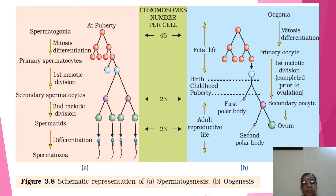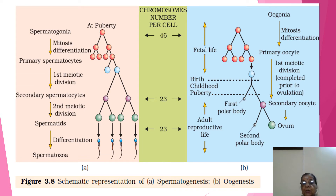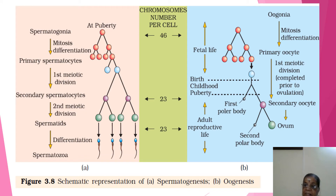We studied spermatogenesis and oogenesis. This is an important event that takes place during sexual reproduction. In video session 7 Part 2, we learned about chromosome number. In humans, it is 23 pairs or 46 chromosomes. Every person receives chromosomes from both parents — one from the father (paternal) and another from the mother (maternal). There are two phases of gametogenesis: spermatogenesis and oogenesis.